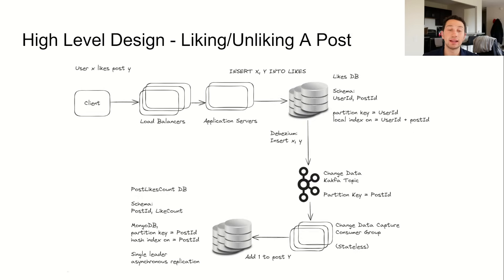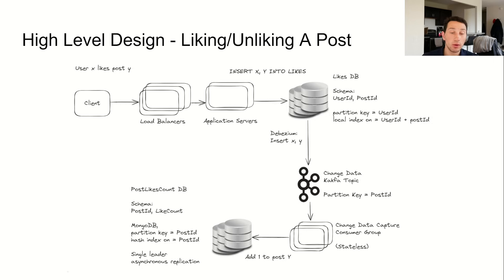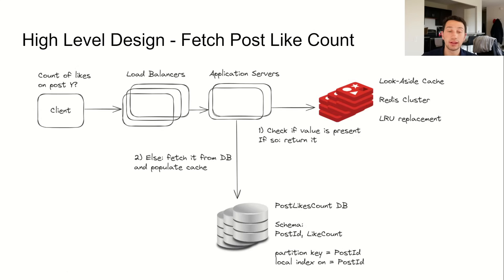When liking or disliking a post, our servers first write or remove the like to or from the likes table. From there we use Debezium to perform change data capture, syncing the data change to Kafka. Finally we have a Kafka consumer group pulling these changes and applying them to our next database table which tracks the like counts of each post. This table is called post likes count and it lives in a distributed MongoDB cluster partitioned based on the post ID. We also use a hash index per node to keep reads and writes to the table very fast. To get the number of likes for a given post, we first check if the result is cached in our look-aside Redis cluster which is partitioned by post ID. If not, we'll fetch the result from the post likes count MongoDB instead.